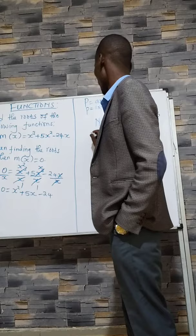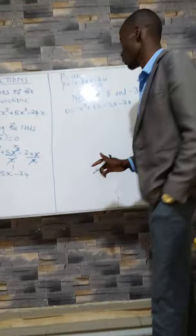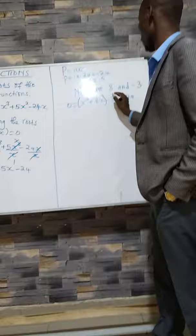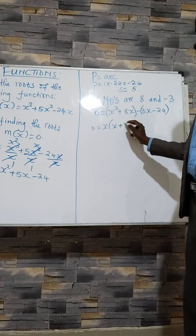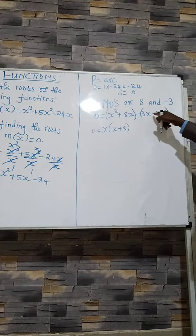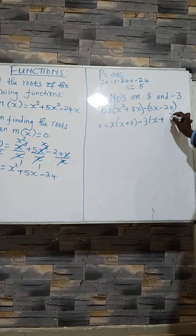We expand the coefficient of x: 0 = x² + 8x - 3x - 24. After expanding, we factorize in groups of 2. x is common in the first group: x(x + 8). 3 is common in the second group: -3(x + 8). Because of this negative, we maintain the plus 8.